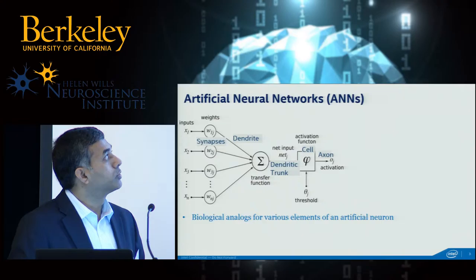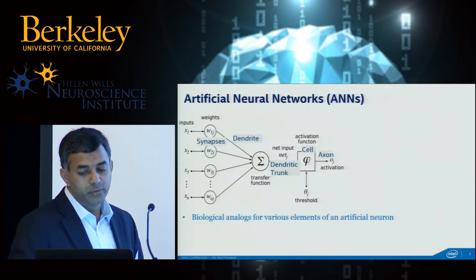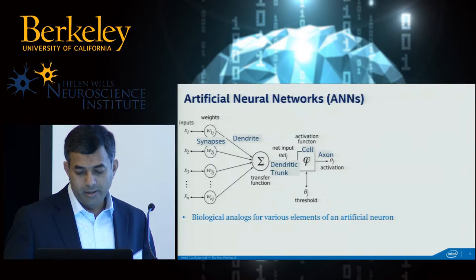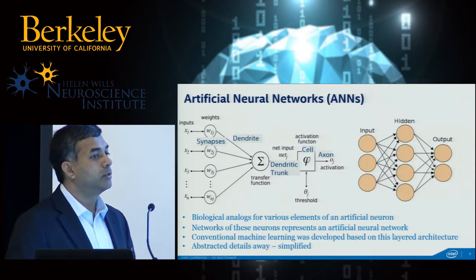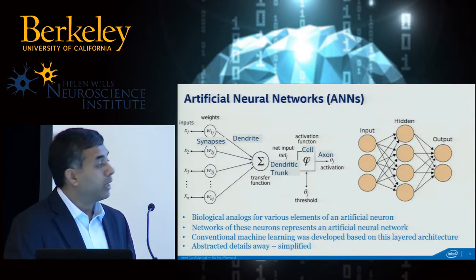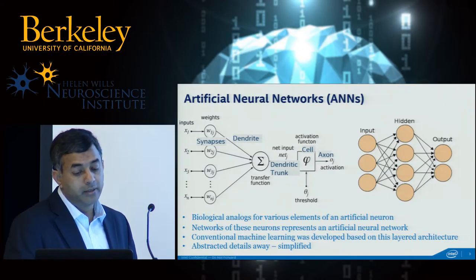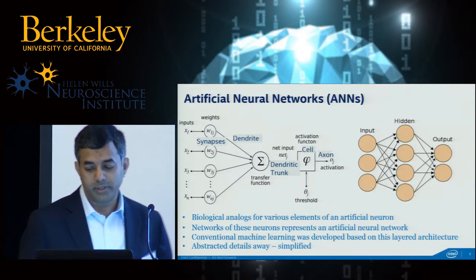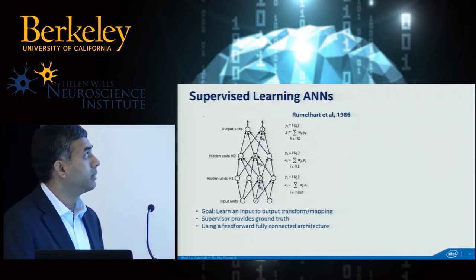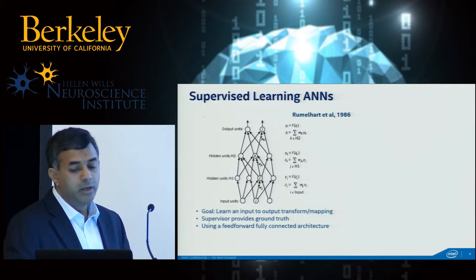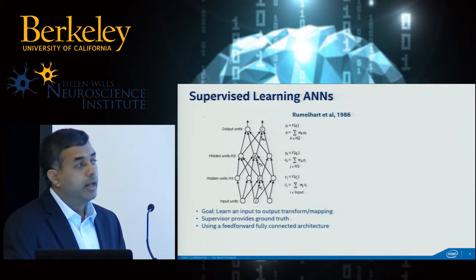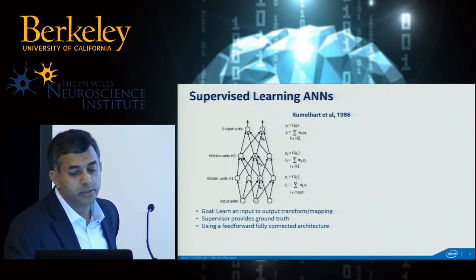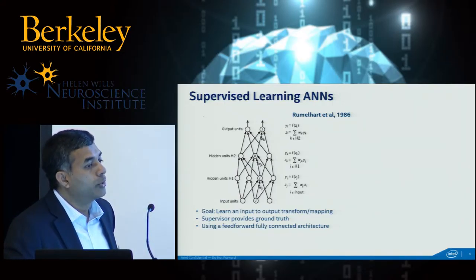Synapses would be those weights. Dendrites would be those arrows getting into the transfer function blocks. Then there's a dendritic trunk, which feeds that information to a cell, which then processes it and sends out information. You put together networks of these neurons to represent the artificial neural network. Conventional machine learning was developed based on this layered architecture where the goal was to abstract away as much detail as possible, keep it as simple as possible, and learn an input-to-output transform or mapping.